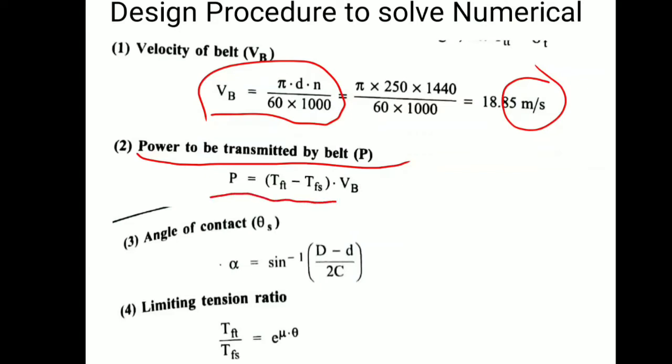We can write this also as (Tft minus Tfs)×V, where Tft means tight side tension and Tfs means slack side tension.